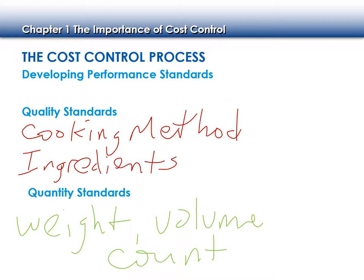At TGI Fridays we made our own house salads. The recipe was one pre-portioned bag of lettuce, three tomato wedges, three cucumbers, and two ounces of dressing. Quantity: one bag of lettuce with a particular weight, three tomatoes, three cucumbers — those are counts. The two ounces of dressing is the volume, the measurement of liquid. If I gave four tomatoes instead of three, I'm spending more money making that salad, and it's going to affect my food cost.